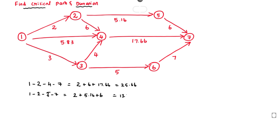The next path is 1→4→7. The duration is 5.83 plus 17.66, giving a total value of 23.5.